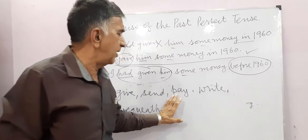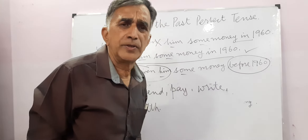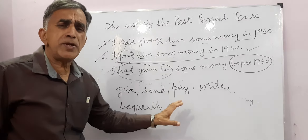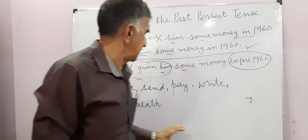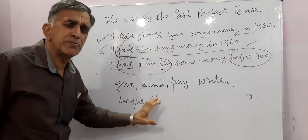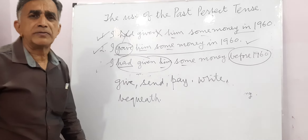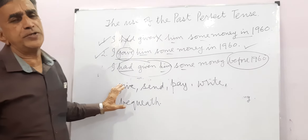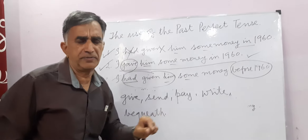I paid Amit two thousand rupees. He wrote me two letters. My father bequeathed me a house. This is how some verbs can take two objects — one indirect and one direct.